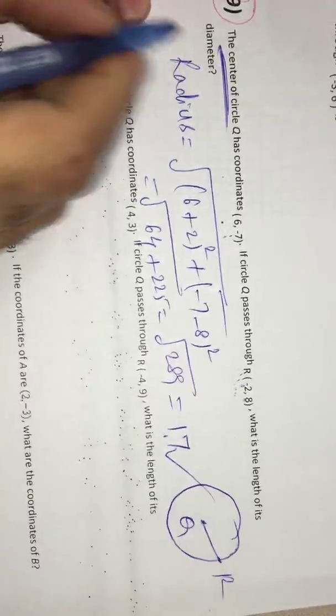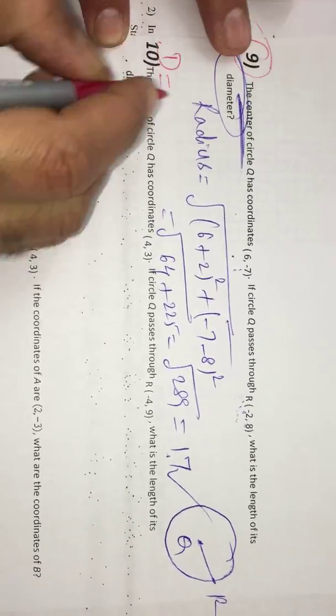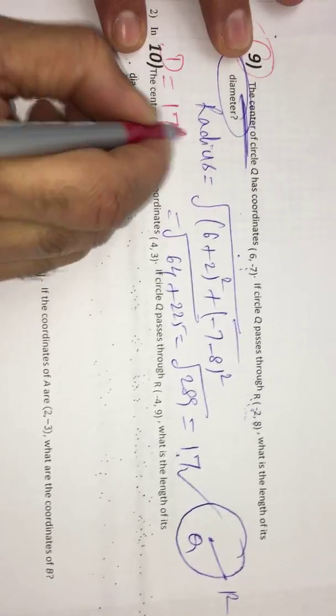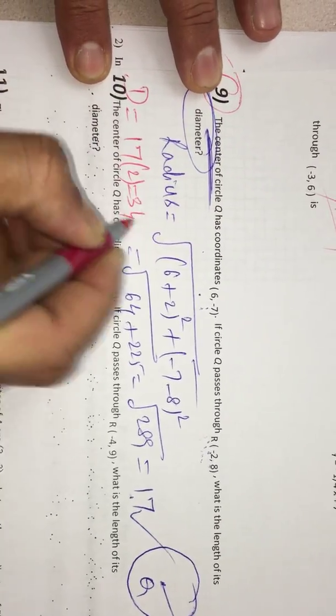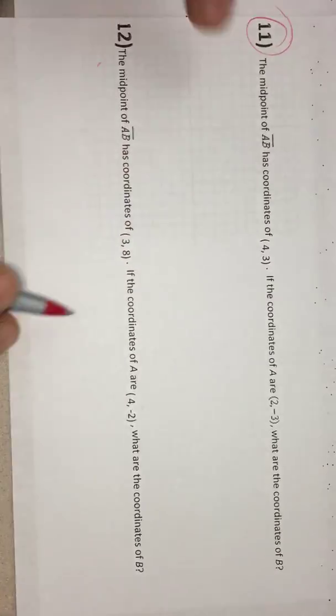This is only radius, but he is asking diameter. Therefore diameter D is equal to this radius times 2. I get 34. So 34 is the answer. Please do 10th in the same way as 9th.